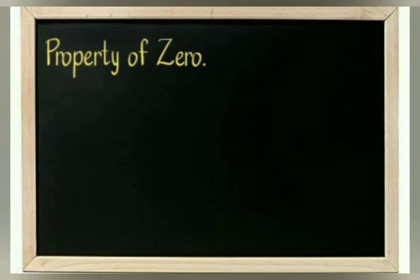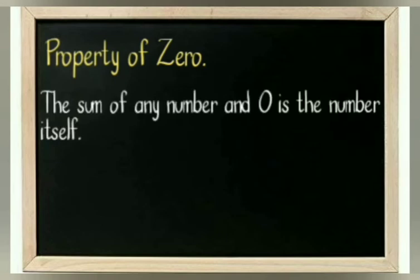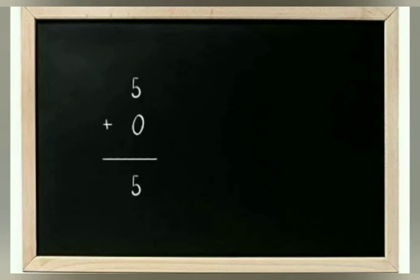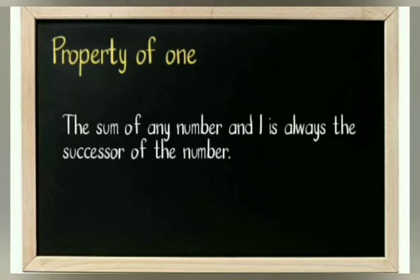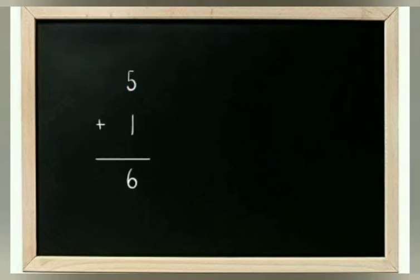Property of zero: the sum of any number and 0 is the number itself. For example, 5 plus 0 is 5, 26 plus 0 is 26, 156 plus 0 is 156. Property of one: the sum of any number and 1 is always the successor of the number. That is, 5 plus 1 is 6, 26 plus 1 is 27, 159 plus 1 is 160.